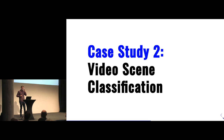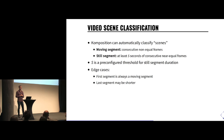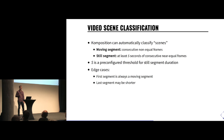Let's look at something slightly harder: the video scene classification. Composition can automatically classify video scenes in your imported video. It finds either moving segments — consecutive non-equal frames — or still segments, which are at least s seconds of consecutive near-equal frames. The near-equality accounts for compression artifacts. The threshold s defines the minimum duration for still segments, so it's not too choppy. The first segment is always considered moving, and the last one can be shorter than s even if it's a still segment, because it doesn't have backtracking capabilities.